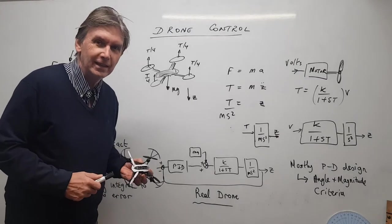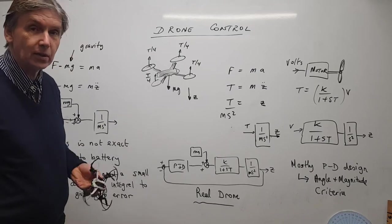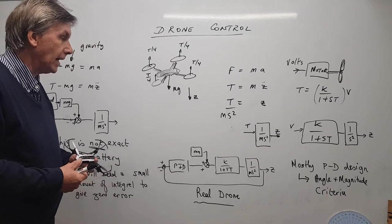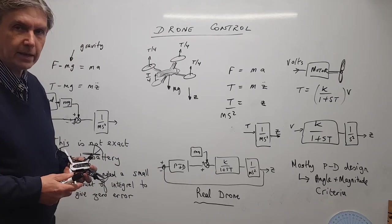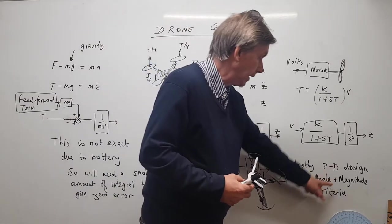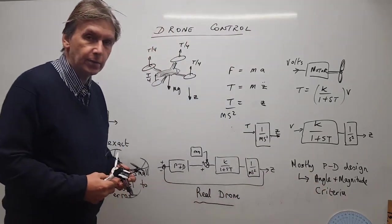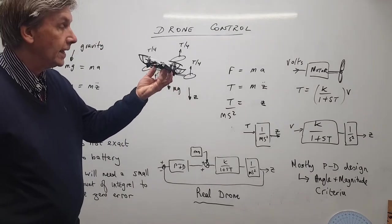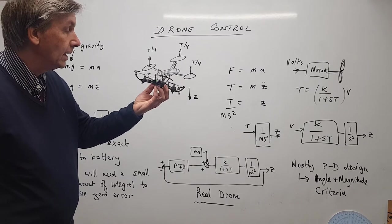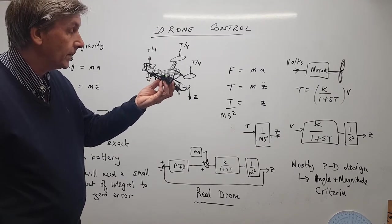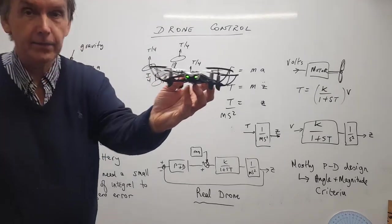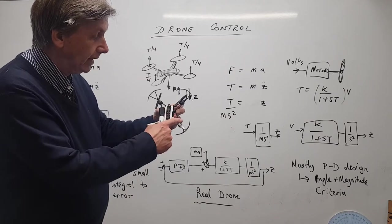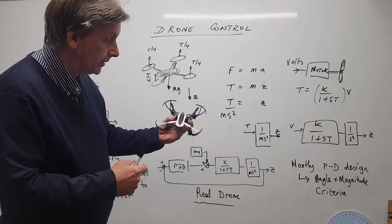Good afternoon. This is a talk on drone control, and specifically how we can use the angle and magnitude criteria to design a PD controller. Here's the little drone I'm going to control and fly using the PD controller — it's a Parrot mini drone, and you can tell it's working because the little lights are flashing. It's a quadcopter with four propellers on some guards.